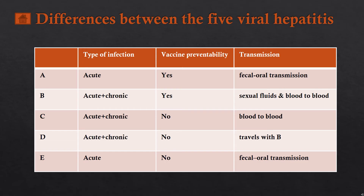Hepatitis B has both chronic and acute phases. In most cases, an acute infection that hasn't been handled properly can easily turn into a chronic infection, especially when it's asymptomatic. It does have a vaccine fortunately, and is transmitted by sexual fluids and blood-to-blood contact. So we should avoid sharing cutting objects like nail cutters.